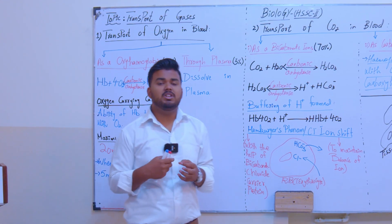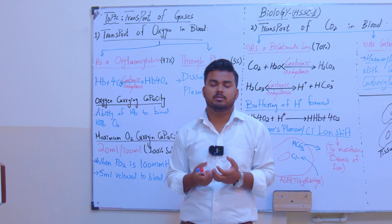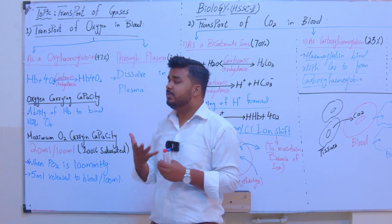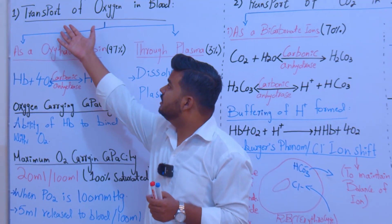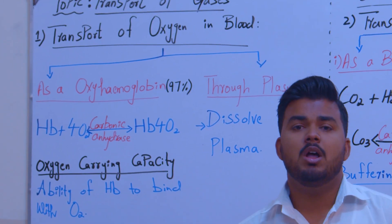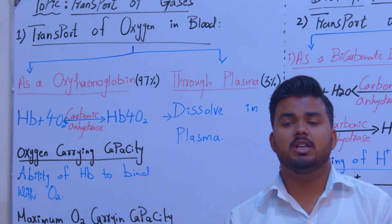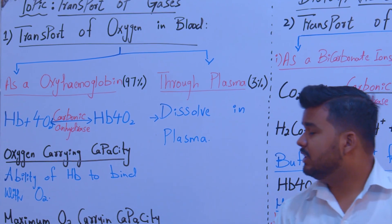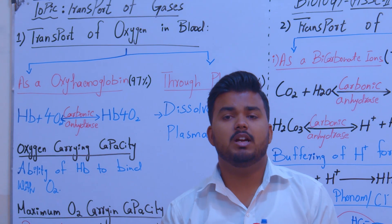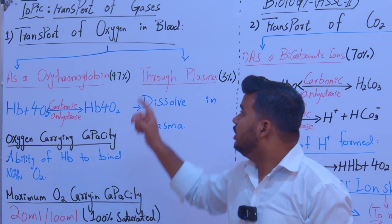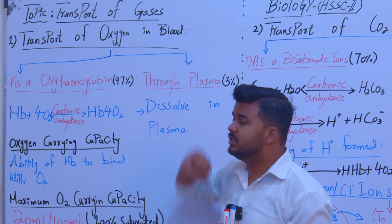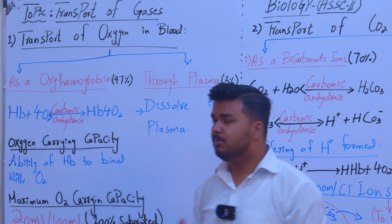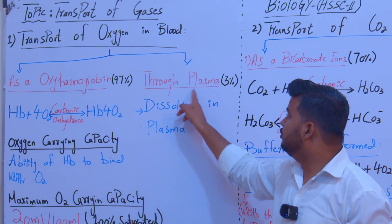The medium used in our body to transport gases is blood. So we start the topic of transport of oxygen in blood. The main medium through which oxygen and carbon dioxide are transported is blood. There are two methods through which blood can transport oxygen.